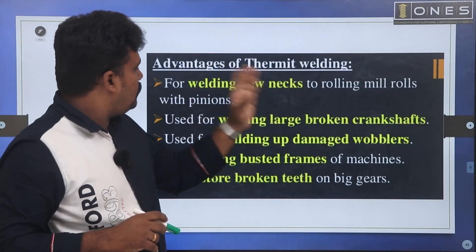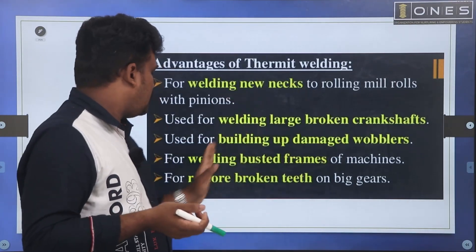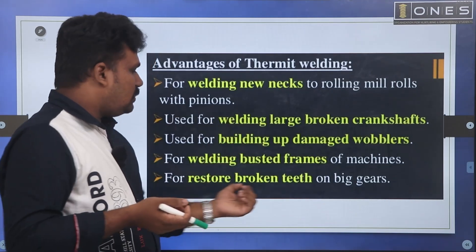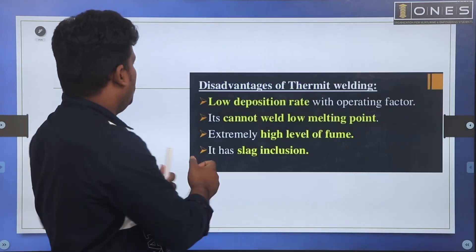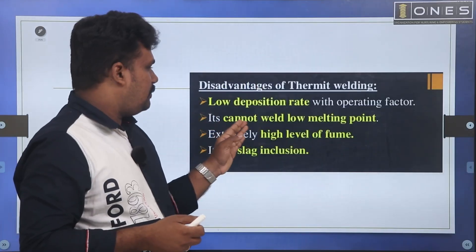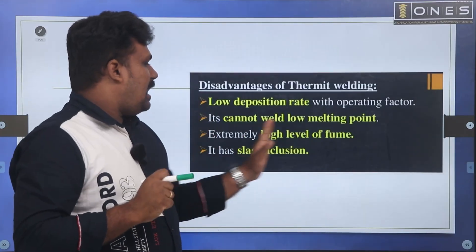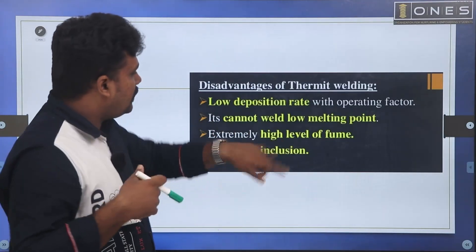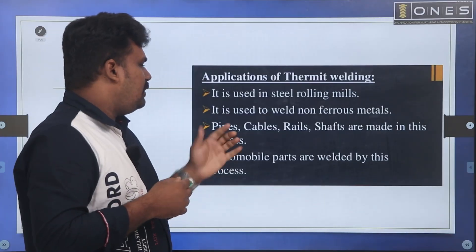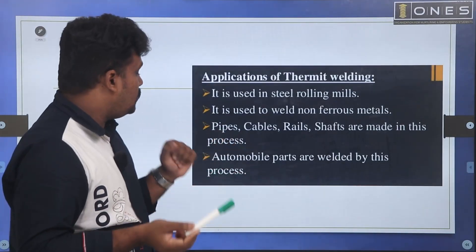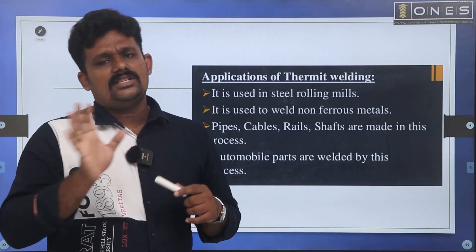Advantages of thermit welding include its welding units capability. Applications include large broken crankshafts, rail lines, building up damaged welding frames, and restoring broken gears. Disadvantages include a low deposition rate, low melting point limitations, heating aluminum and iron oxide producing fumes, and high levels of slag inclusions. Applications include steel rolling, pipes, cables, rails, shafts, and automobile parts.